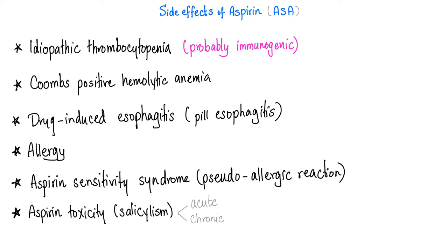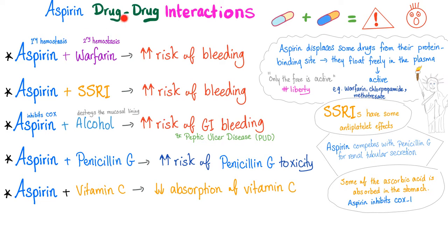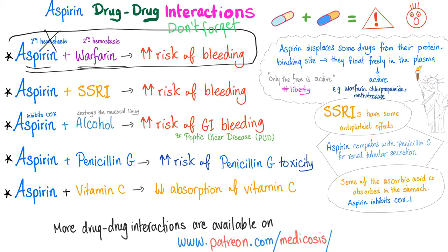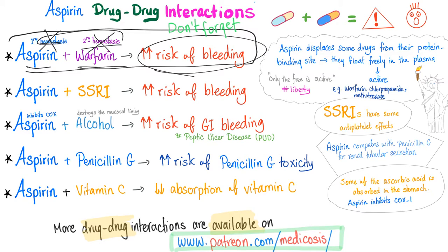Drug-drug interaction: aspirin plus warfarin — no, please no. If you forget everything in this video, please remember you should not add aspirin and warfarin together. Why? Aspirin inhibits cyclooxygenase, which inhibits thromboxane A2 formation, which inhibits platelet aggregation — primary hemostasis is gone. Warfarin inhibits vitamin K-dependent coagulation factors: prothrombin, 7, 9, and 10, protein C and protein S. With no coagulation factors, secondary hemostasis is gone. You risk bleeding even with minor trauma — intracranial hemorrhage, internal GI bleeding. It's horrible.